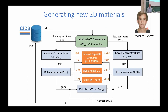My PhD student Peter took 2,500 structures from the C2DB with an energy above the convex hull below 0.3 eV, and used the crystal diffusion variational autoencoder to create 10,000 crystal structures, which he then optimized with DFT. Some were duplicates and removed; some were no longer 2D after relaxation and were removed; some DFT calculations didn't converge and were removed. Eventually he was left with 3,000 2D crystals generated by this generative model.